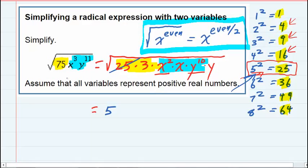And then the variables that have even exponents, those we can take half of the exponents. So x² becomes x¹, taking half of it. 2 divided by 2 is 1. The y¹⁰ can come out as a y⁵.